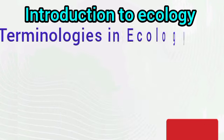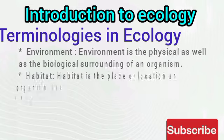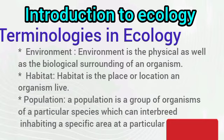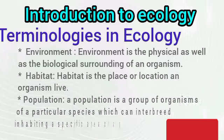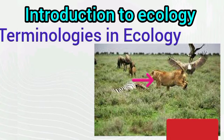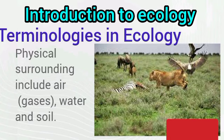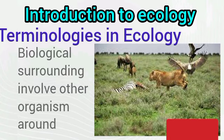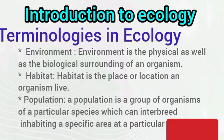Let's take a look at some of the common terms that we use in ecological studies. The environment of an organism is the physical surrounding as well as the biological surrounding of the organism. Physical surrounding means the non-living things around, while biological surrounding means other living organisms around this organism.